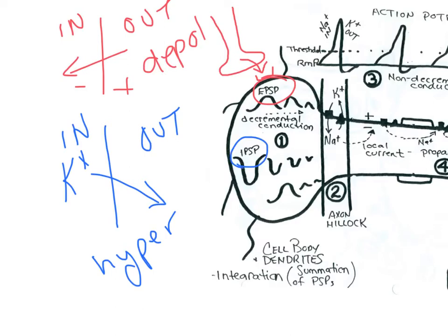Whether you get an EPSP or an IPSP depends on the type of chemically gated channel that's being opened in response to a particular neurotransmitter. One cell could release one neurotransmitter and another cell could release a different neurotransmitter, and each postsynaptic membrane could have receptors for more than one neurotransmitter.